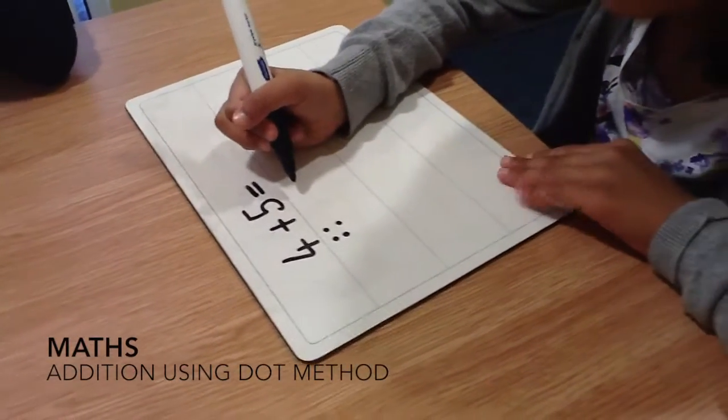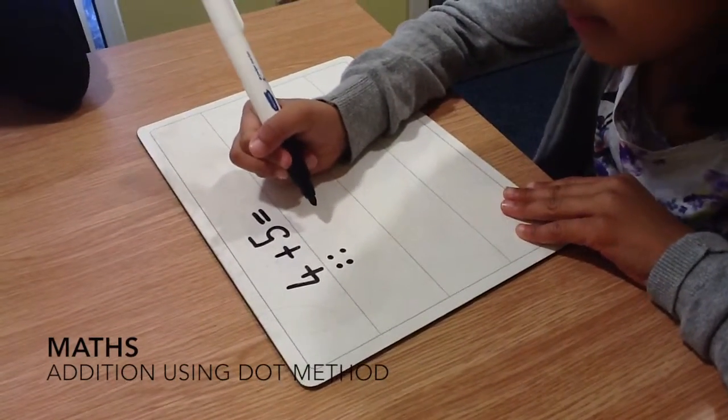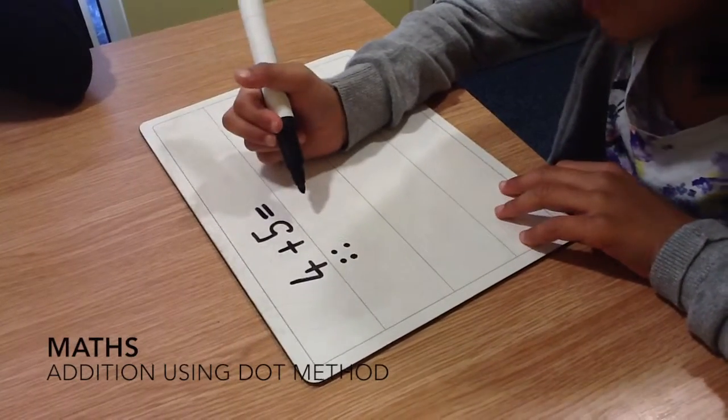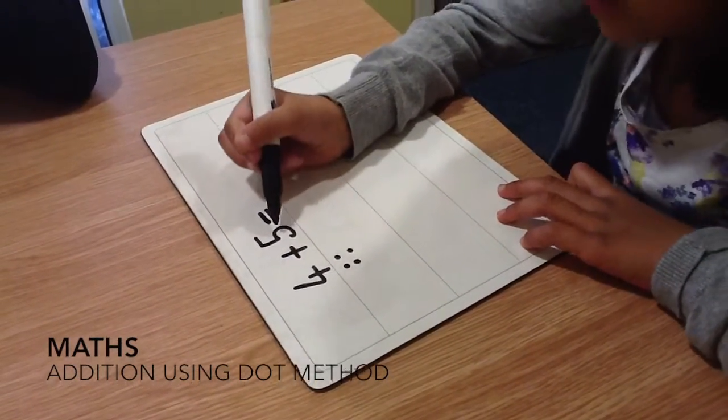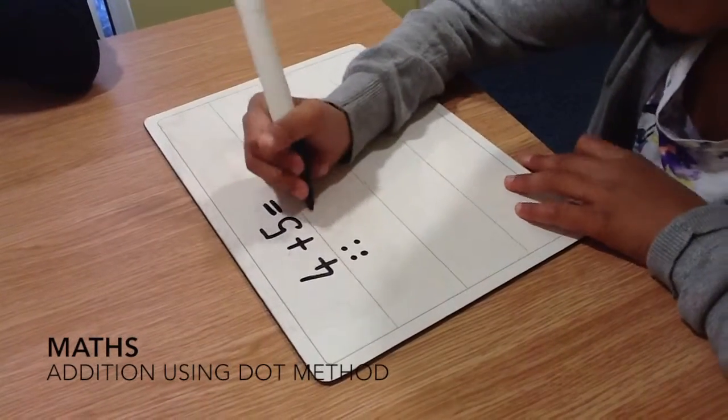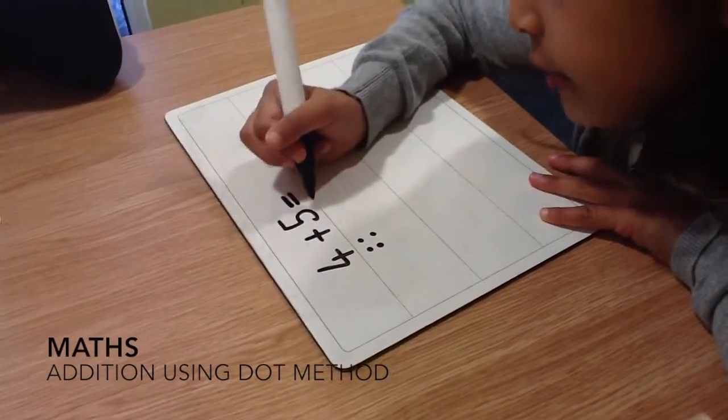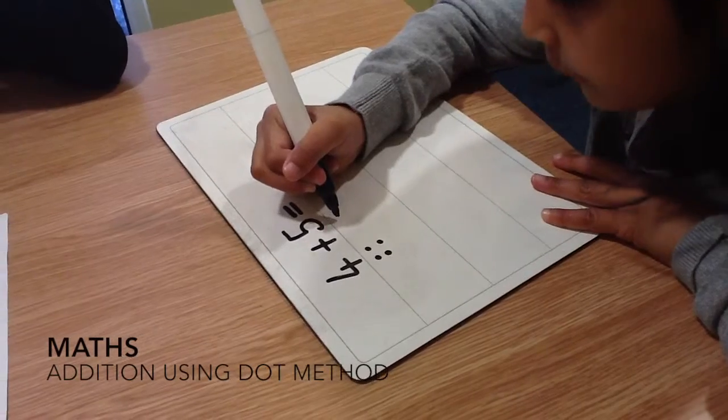Then, we have a look at the next number because it says plus five. So, we're going to add five. So, we have a look at the number and that's five. So, then we do five dots.